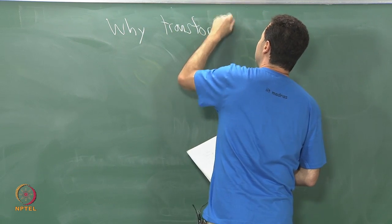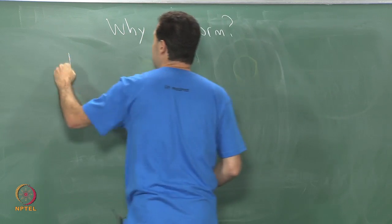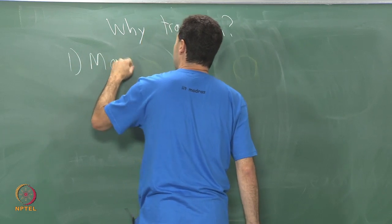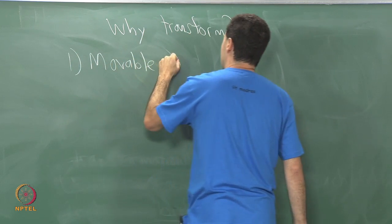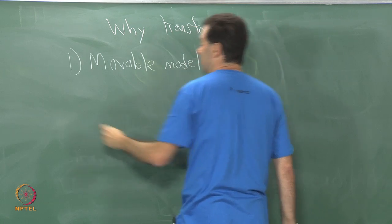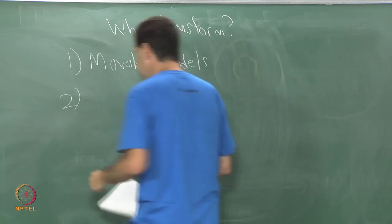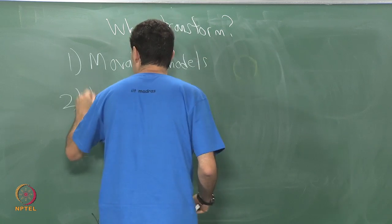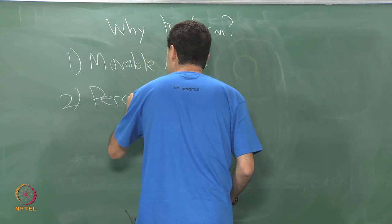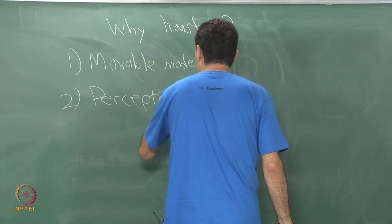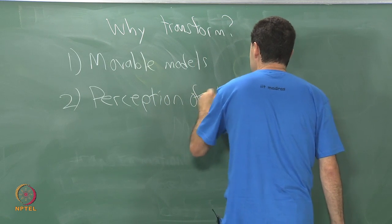Why are we performing transformations? Well it should be clear in the case of movable models I just talked about that, but there is another case which I think connected very nicely to our lectures from last time, which is perception of stationarity.